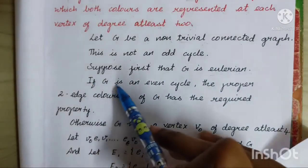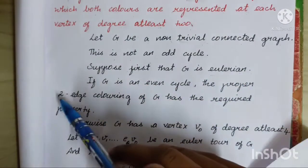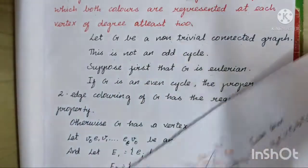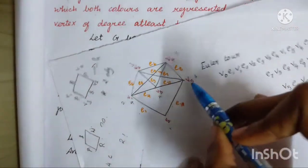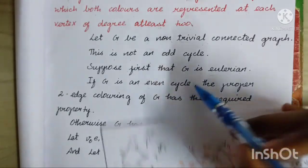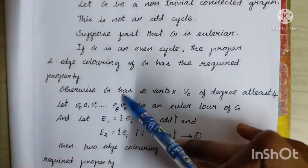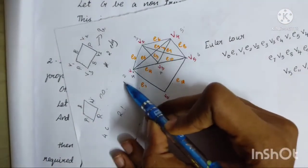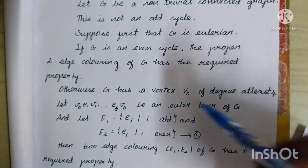If G is an even cycle, the proper 2-edge coloring of G has the required property. This is a 2-edge coloring of an even cycle. Otherwise, G has a vertex V0 of degree at least 4 — that is, degree 1, 2, 3, 4.